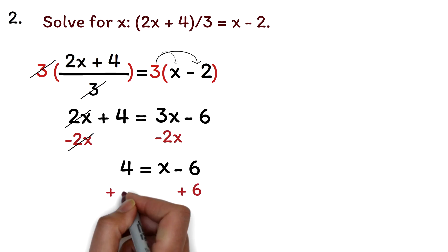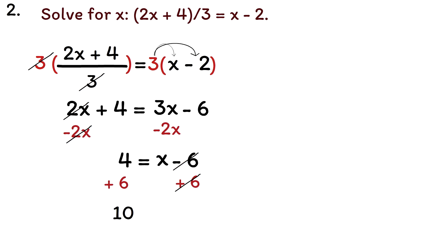Finally, we can add 6 to both sides to isolate x. The 6 will cancel out. 4 plus 6 is 10. So, the final answer is x equals 10.